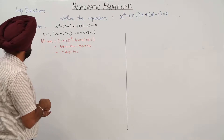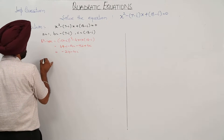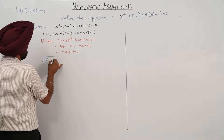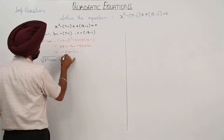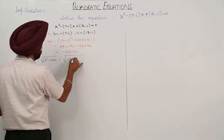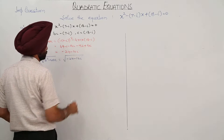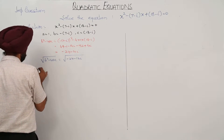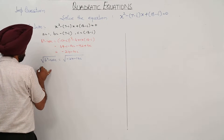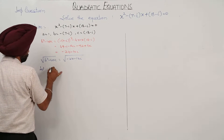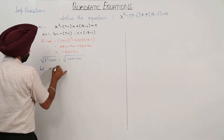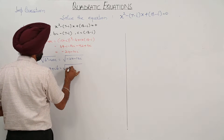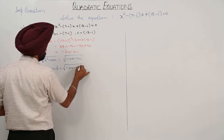Now the square root of b² - 4ac = √(-24 - 10i). First, let's find the square root of this complex number. Let a + ib = √(-24 - 10i).